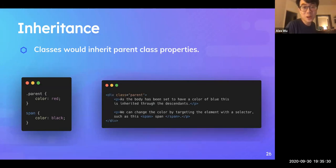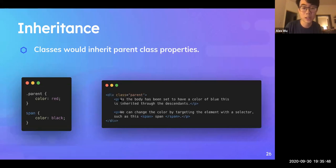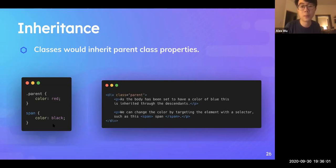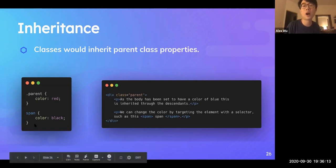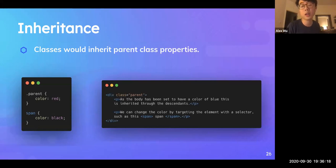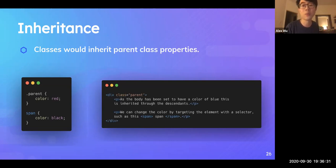Let's talk about inheritance. Elements inherit parent class properties. Here, a div with class 'parent' contains two paragraphs — both will become red because they inherit from the parent class. However, a 'span' class will become black because it has more specific styling than the parent class. We'll talk more about CSS priority in CSS two. Essentially, children tags inherit parent class properties.